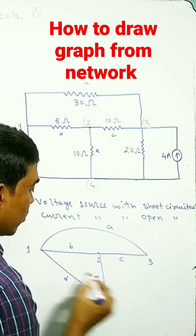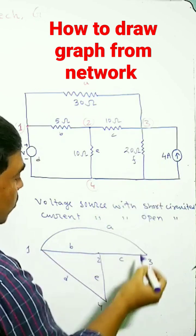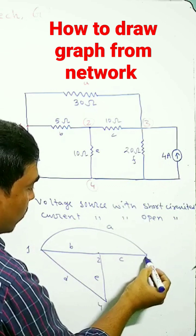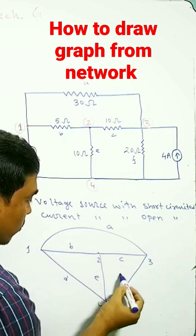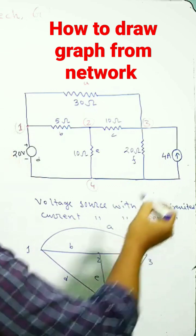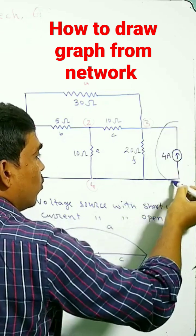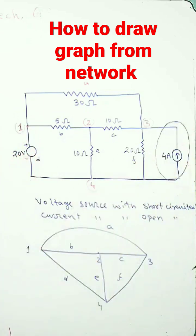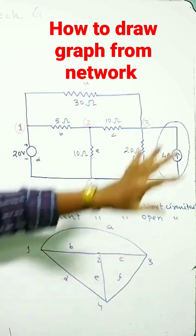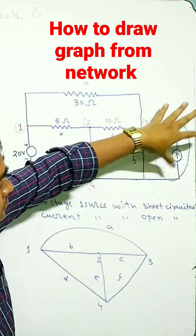This branch is E, and this branch is F. But this portion is open-circuited because this is a current source, that's why this branch is open.